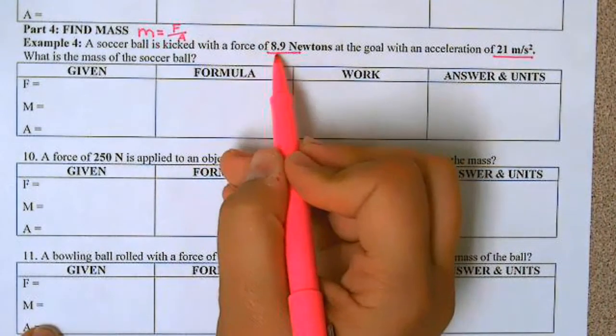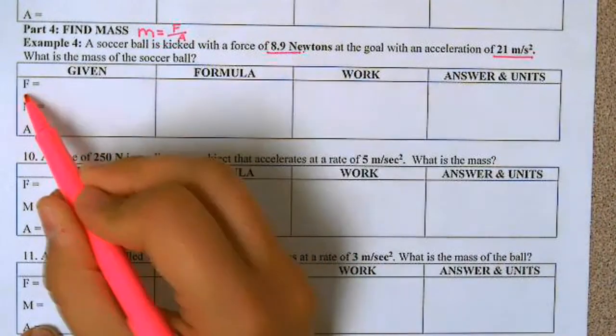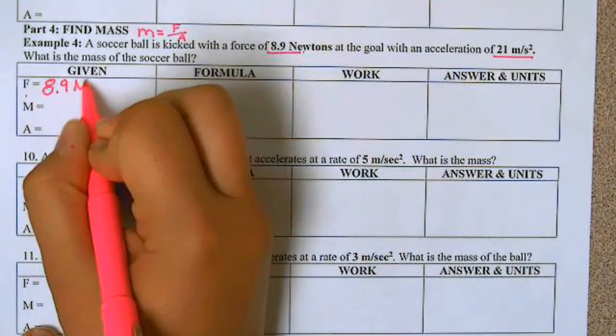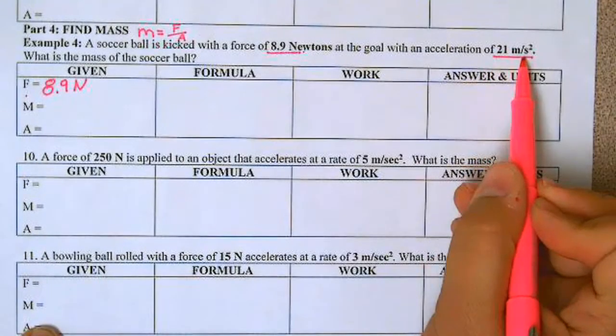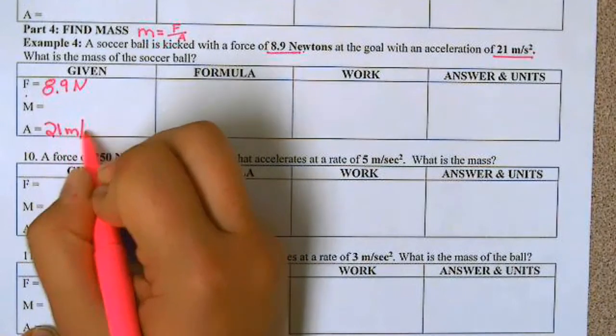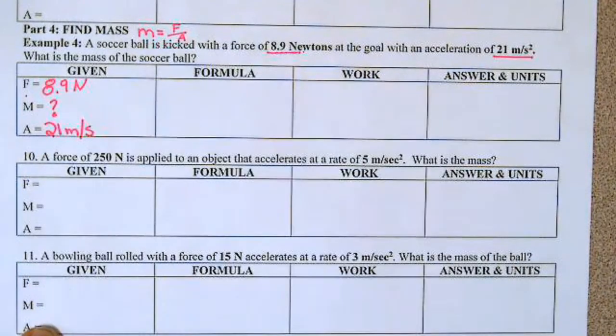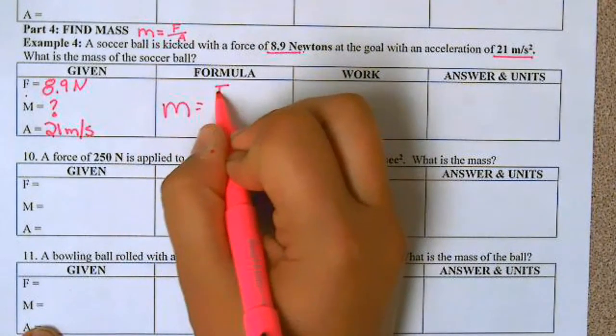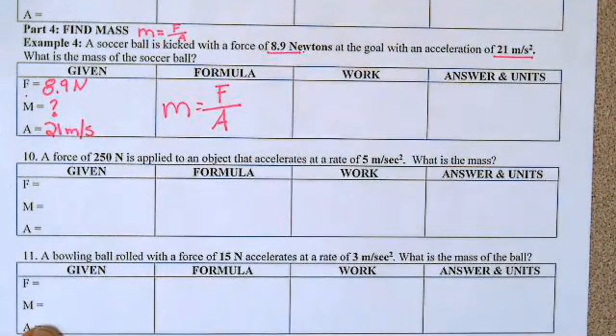So we have 8.9 newtons. Newtons is the F. We have 21 meters per second, which is the acceleration. We're looking for the mass. So the formula: mass equals force divided by acceleration.